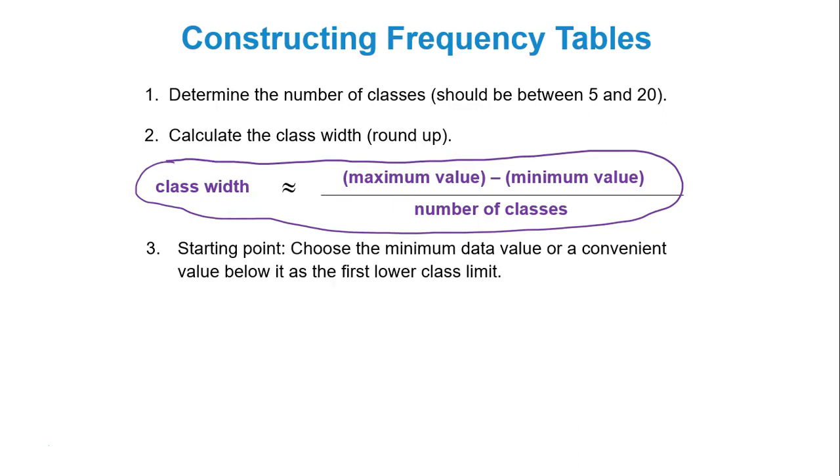Third, look at your minimum data value. Then choose a starting point just below that minimum data value that is a nice pretty number. So if your minimum data value is like 42, I would pick a starting point for my first class of 40.